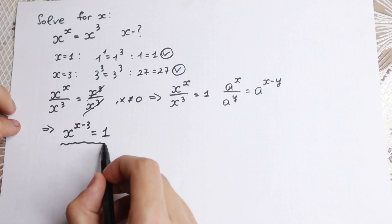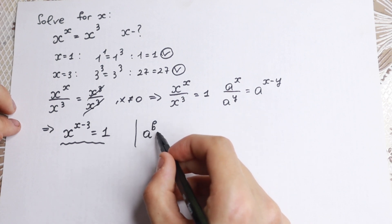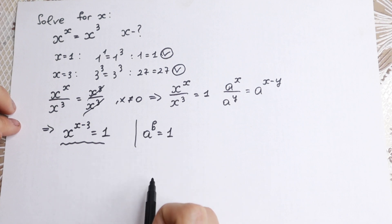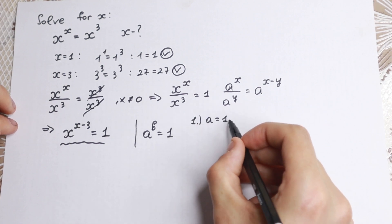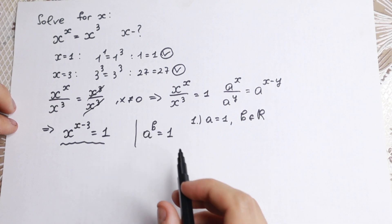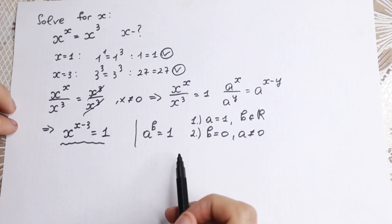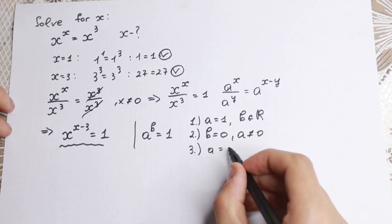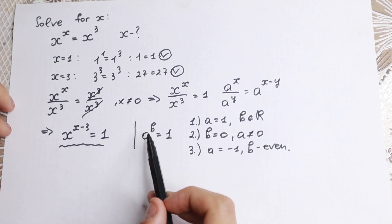This equation has the form a to the power b equals 1. According to theory, there are three cases. First case: a equals 1, when b is any real number. Second case: b equals 0, but then a must not equal 0, because 0 to the power 0 is undefined. Third case: a equals minus 1, and b must be an even number.